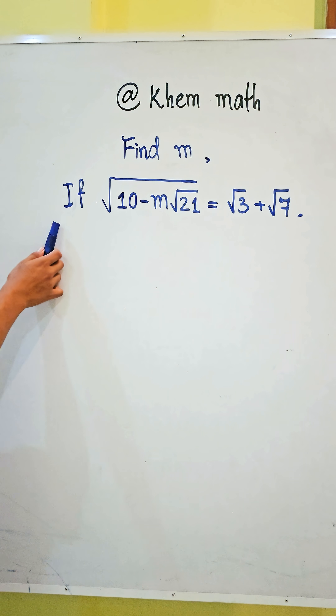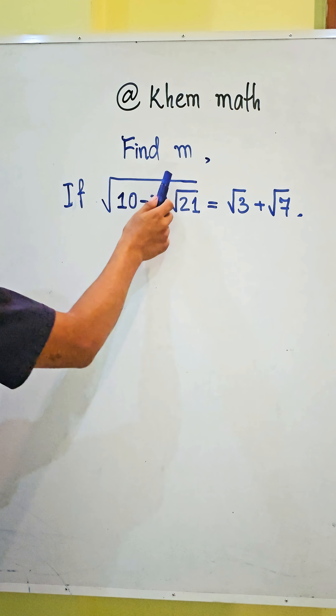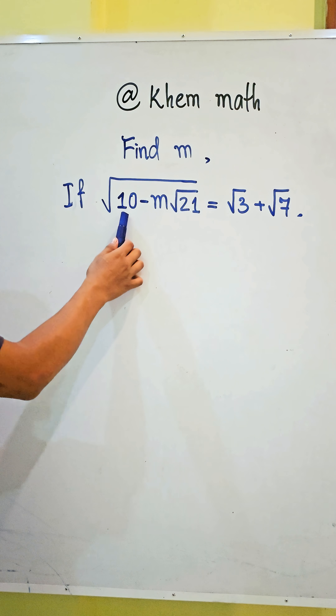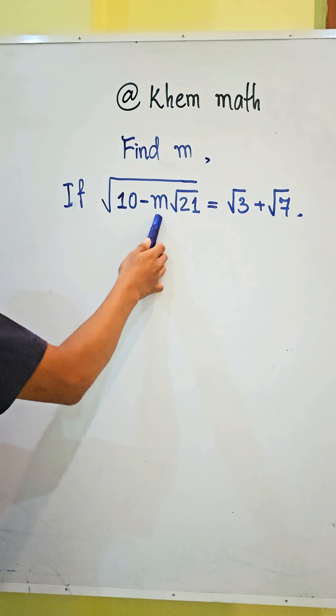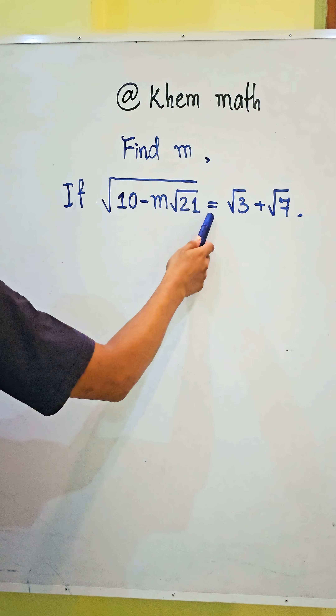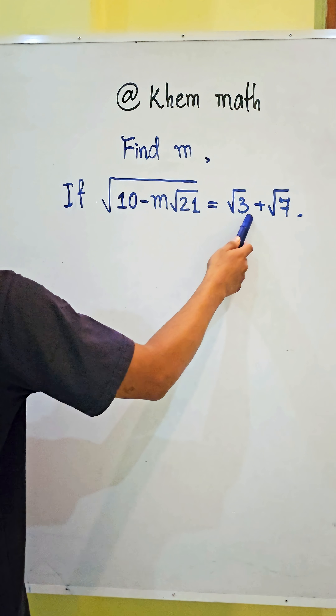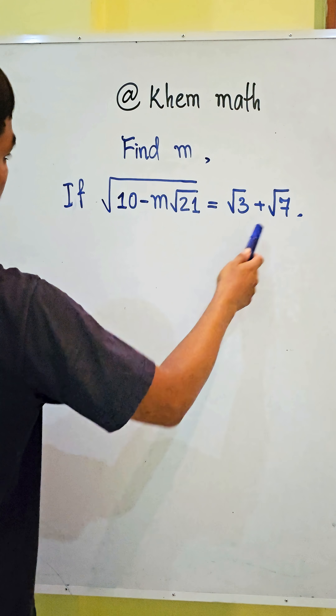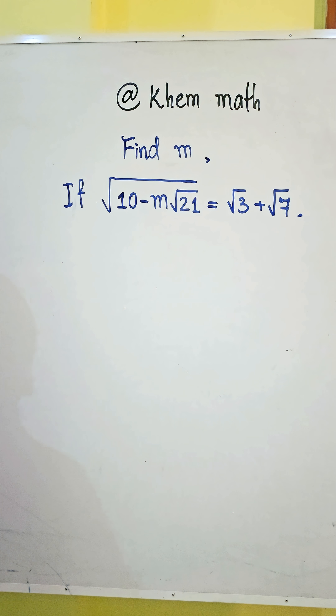Find m if square root of (10 minus m times square root 21) equals square root 3 plus square root 7.